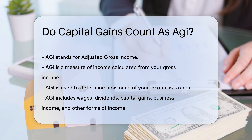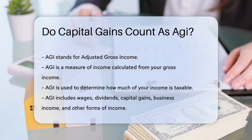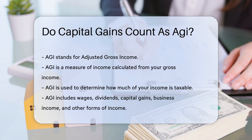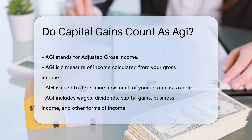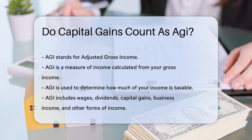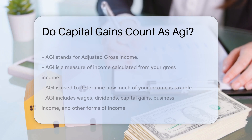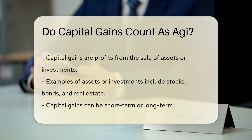AGI is a measure of income calculated from your gross income and used to determine how much of your income is taxable. It includes wages, dividends, capital gains, business income, and other forms of income.